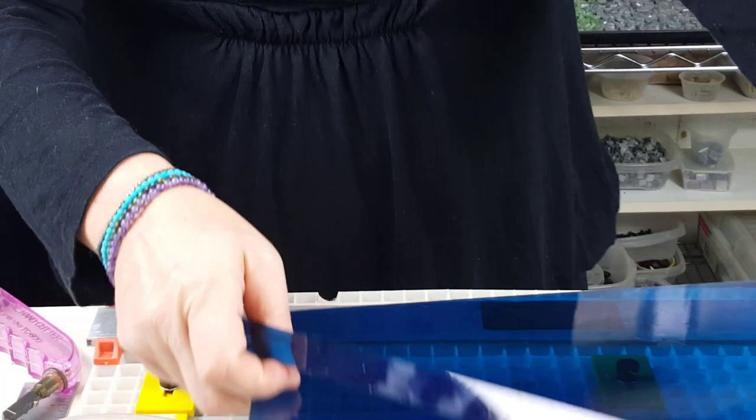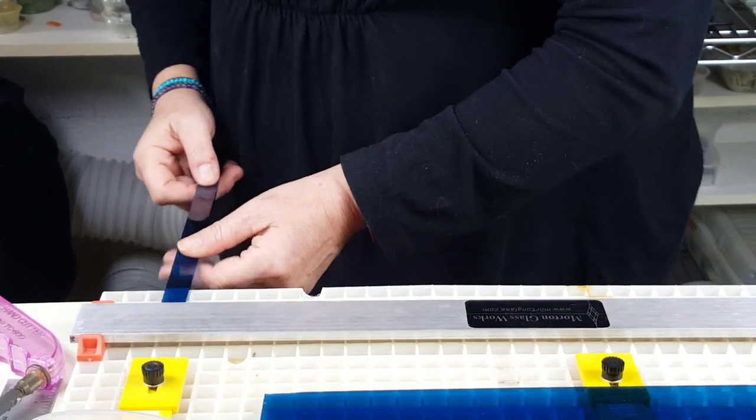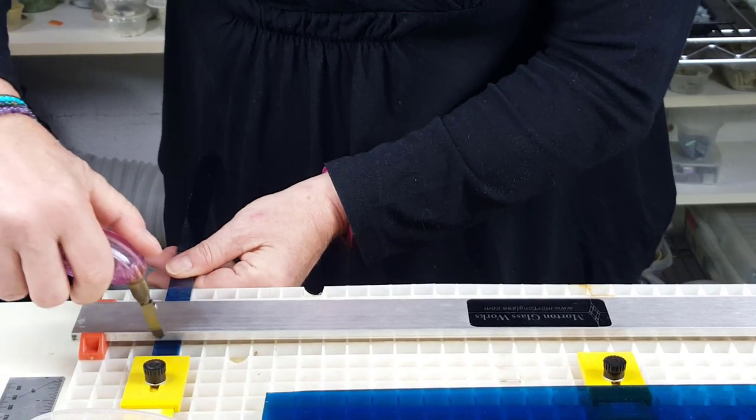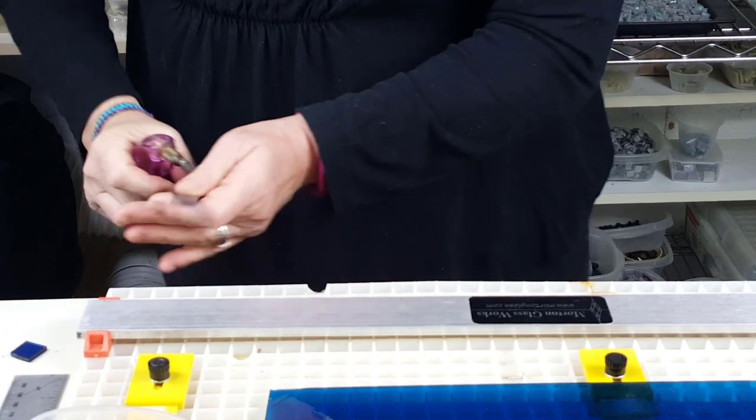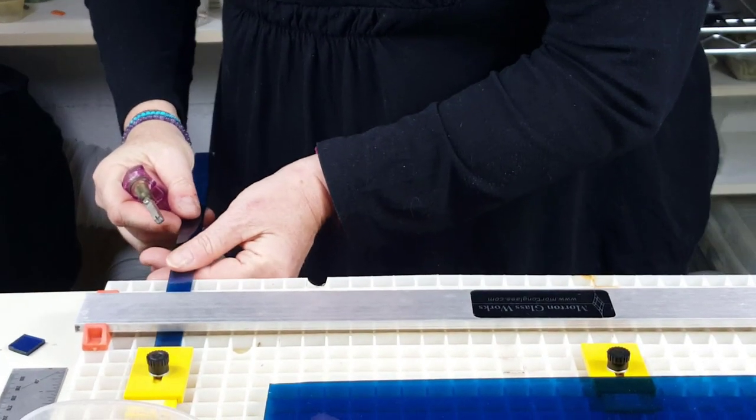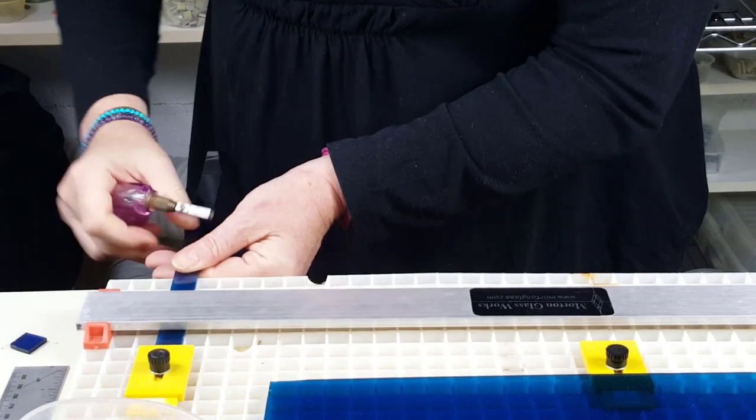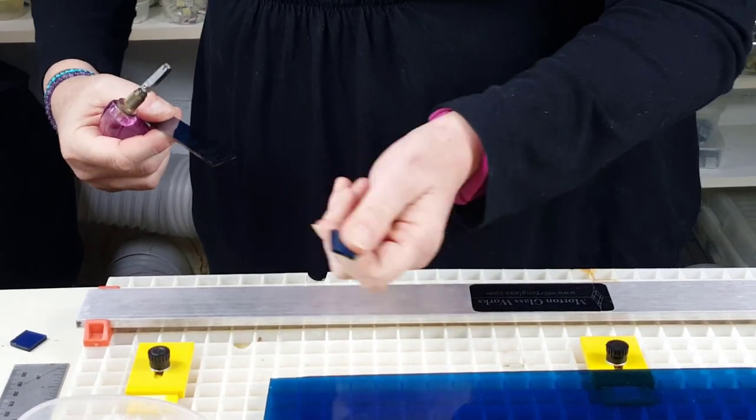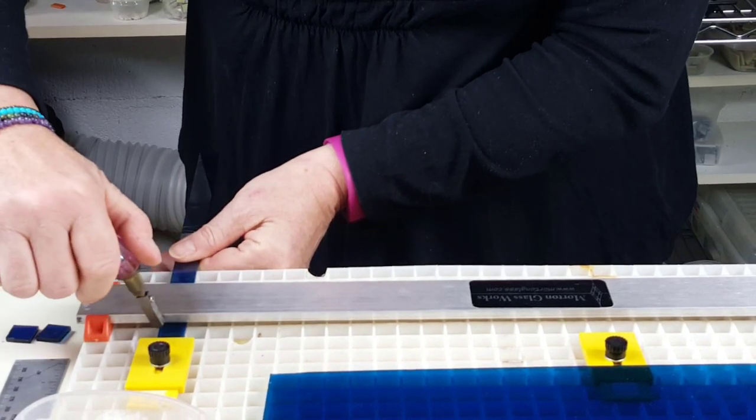Then what you can do is now you can take this and put it in here, and score, and snap, and make tiles, square tiles, for all of your pieces. So that's one way of doing it.